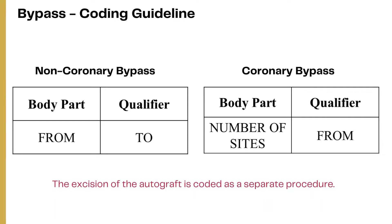One important guideline to remember for the root operation bypass: for non-coronary bypass procedures, such as colostomy formation, the body part value identifies the origin of the bypass and the qualifier value identifies the destination of the bypass. However, for coronary artery bypass procedures, the body part value identifies the number of coronary artery sites that are bypassed, and the qualifier identifies the origin of the bypass — for example, if the bypass is from the aorta to the left anterior descending artery, the qualifier will be aorta.